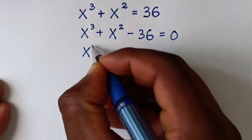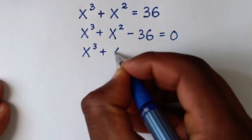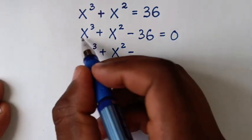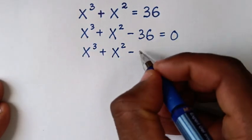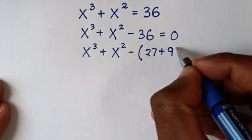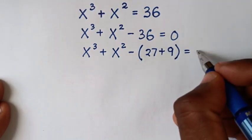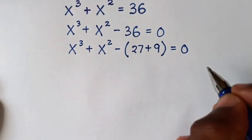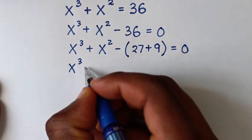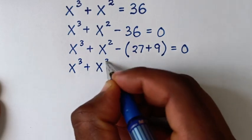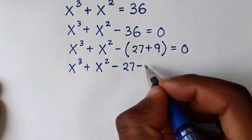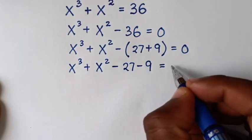Then it will be x power 3 plus x power 2 minus 36. We'll split according to the exponent. So 36 is the same as bracket 27 plus 9 bracket is equal to 0. Then in the next step, we'll take this negative inside the bracket, so it will be x power 3 plus x power 2 minus 27 minus 9 is equal to 0.